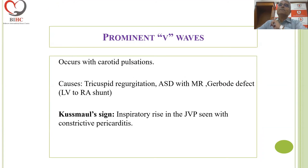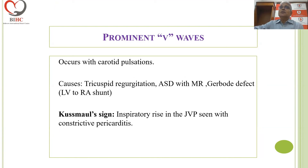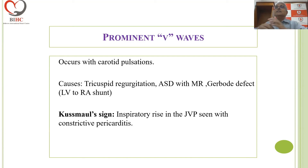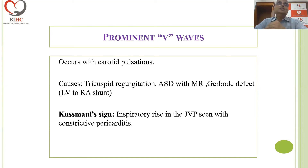Prominent V waves occur when there is tricuspid regurgitation, or when there is an ASD with mitral regurgitation, or a condition called Gerbode effect, which is an LV-to-right atrial shunt. In constrictive pericarditis with inspiration, the JVP rises — whereas normally with inspiration, as the RA is distending, the JVP drops. This is called Kussmaul's sign: in constrictive pericarditis, inspiration causes a rise in the JVP.